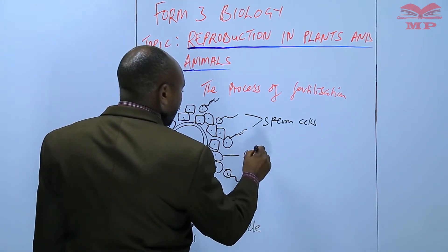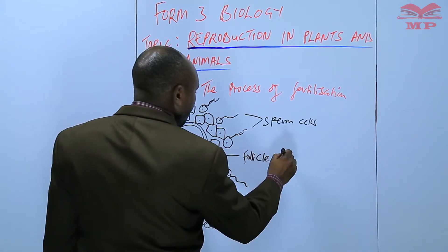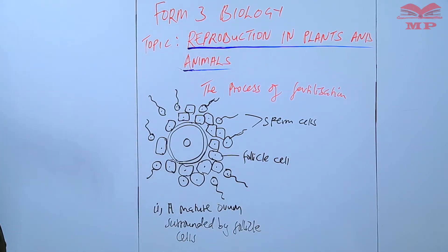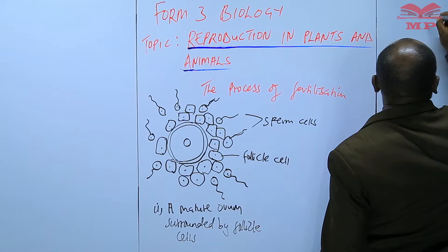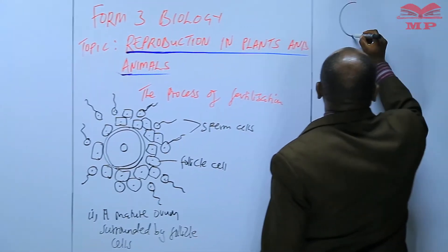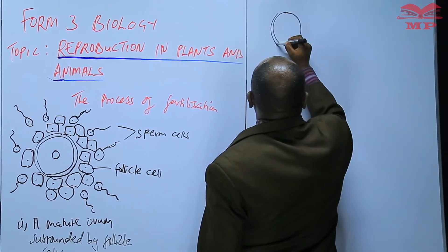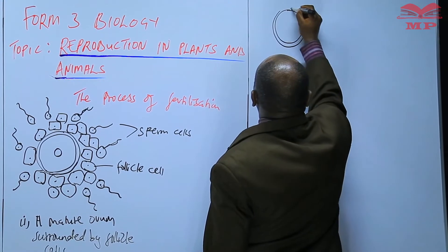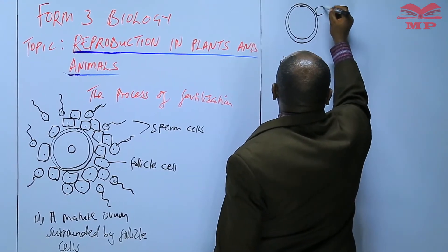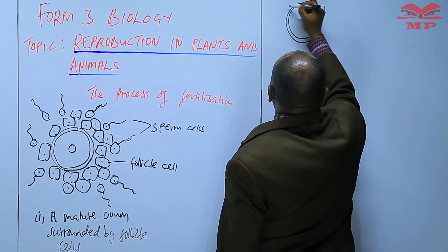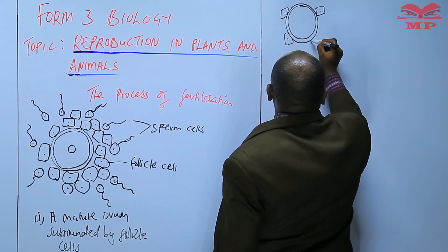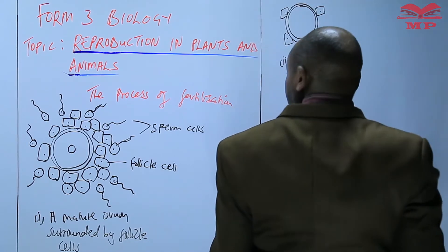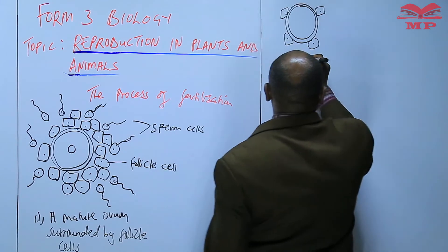These are the follicle cells. And of course, we have the ovum. At number two, most of the follicle cells have been scattered.